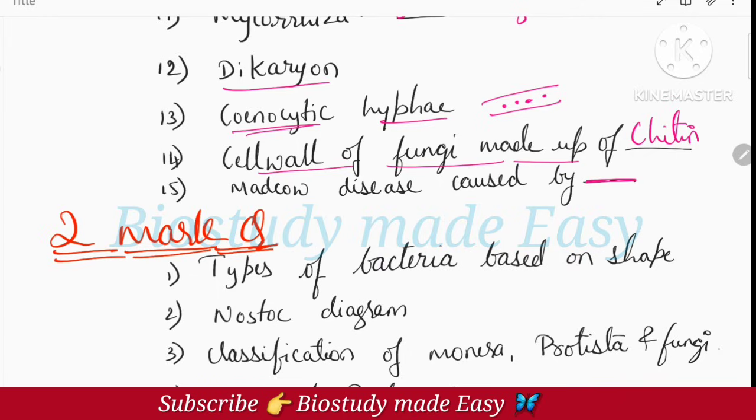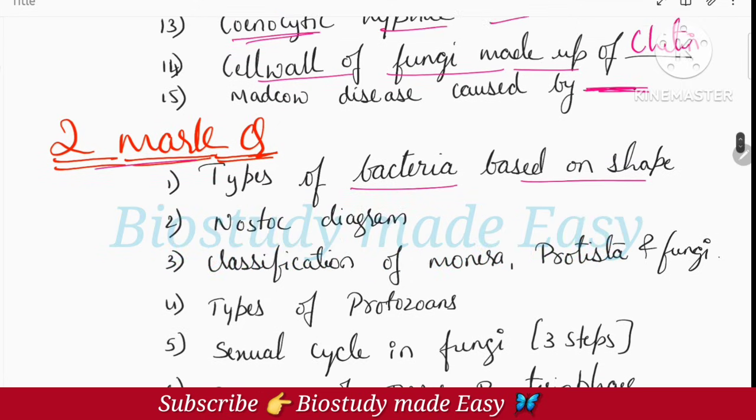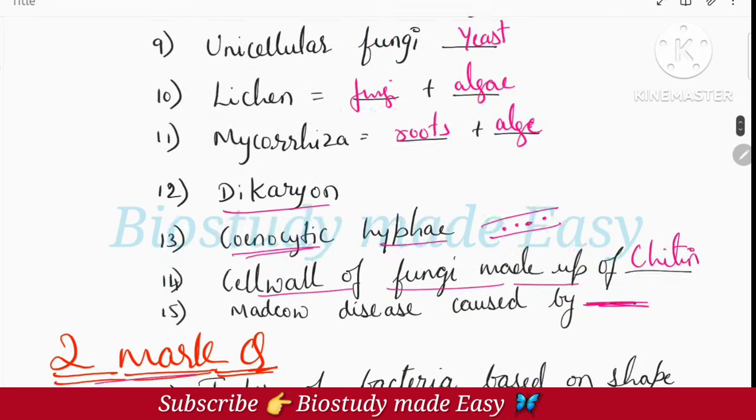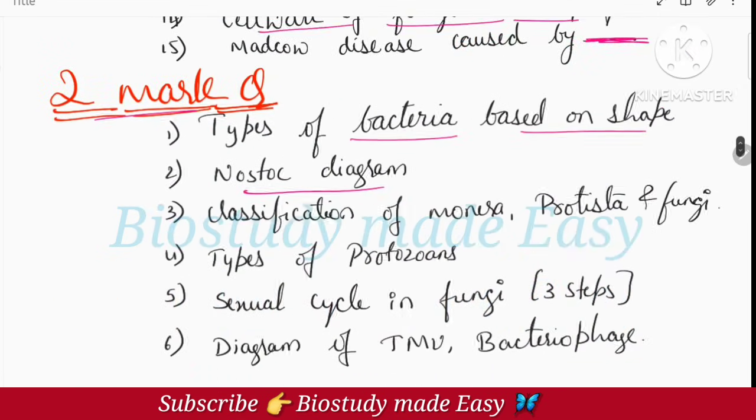The last part of the video - virus, viroids, prions - you will be able to answer this. Comment the answer, I will check. Next, 2 mark questions: Types of bacteria based on the shape - there are four types of bacteria: cocci, spirillum, vibrio, and rod-shaped bacillus. So you mention which shape it has. Next, Nostoc diagram. So this Nostoc diagram, you have to draw for 2 marks. Next, classification of Monera.